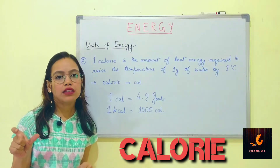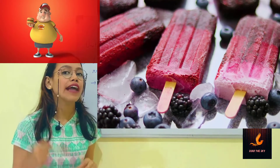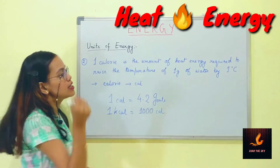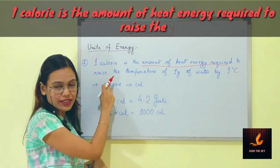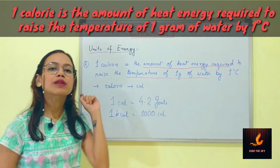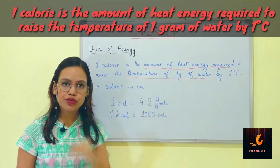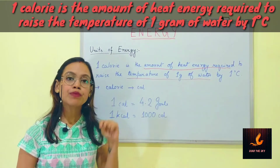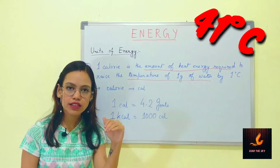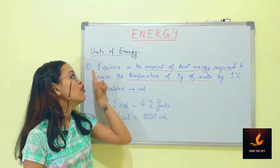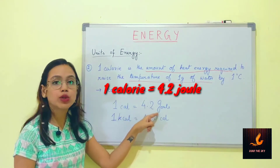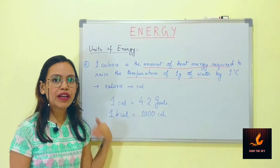The next unit of energy is calorie. We have all heard about the term calorie in regard to weight loss and weight gain. Calorie is a unit of a specific type of energy which is heat energy. 1 calorie is the amount of heat energy required to raise the temperature of 1 gram of water by 1 degree Celsius. For example, to raise the temperature of 1 gram of water from 40 degrees to 41 degrees Celsius, the energy required is 1 calorie. 1 calorie is equal to 4.2 joule, and calories can also be measured in kilocalories, where 1 kilocalorie equals 1000 calories.